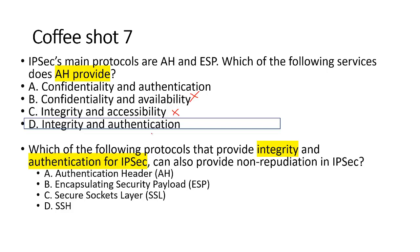Which of the following protocols provides integrity, authentication, and also non-repudiation in IPSec? Non-repudiation means the sender cannot deny their action. SSL is used for secure communication — removed. SSH is used for remote management — removed. ESP offers confidentiality. Since the question asks only about integrity and authentication, not confidentiality, the answer is Authentication Header (AH). If the question mentioned encryption, I would go with ESP because AH is included within ESP.